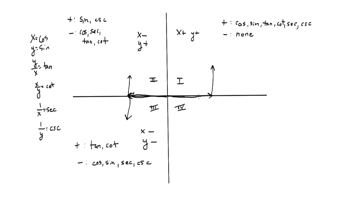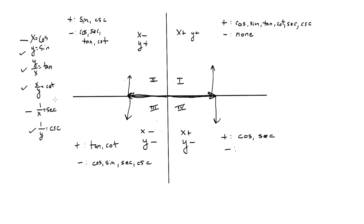In quadrant four, x is positive and y is negative. Anything with strictly an x value is going to be positive, so that would be cosine and its reciprocal secant. The others — sine and its reciprocal cosecant — are negative because y is negative. And tan and cotan are also negative because the ratio of a positive to a negative or negative to a positive gives a negative answer. So sine, cosecant, tan, and cotan are all negative in quadrant four.